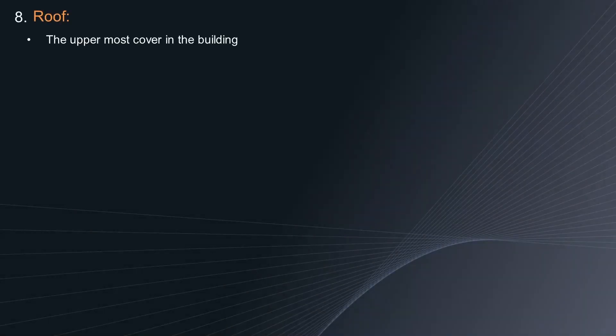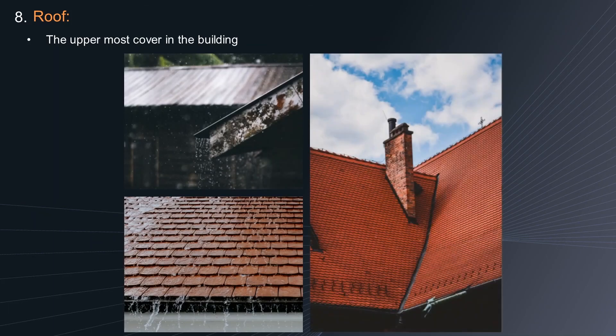Element 8: Roof. The roof is the uppermost cover of the building. A building is protected from external weather such as rain, sun, and wind due to the existence of this element. Roofs are exposed to rain, sun, and heat with higher intensity compared to other building elements. Therefore, roofs must be strong enough to resist temperature variation so that they can last long.